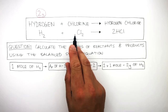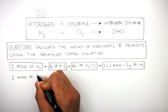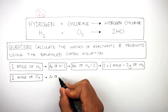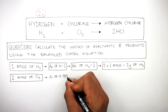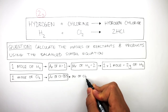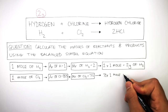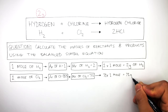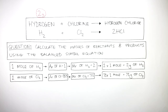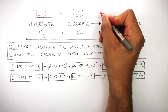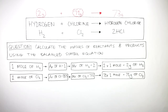From the balanced symbol equation, there is 1 mole of Cl2. The periodic table tells us that the AR of chlorine is 35.5, and the MR of Cl2 is 71. So 71 times 1 mole equals 71 grams of Cl2. The law of conservation of mass tells us 2 grams plus 71 grams means there should be 73 grams of hydrogen chloride being produced.